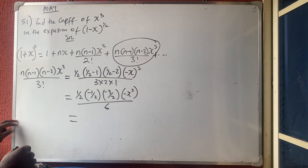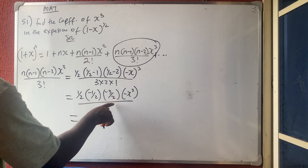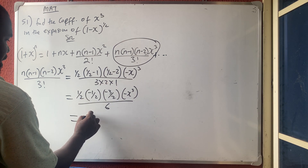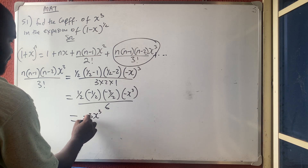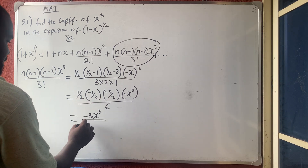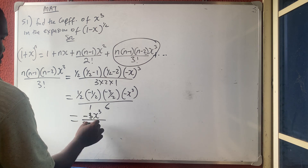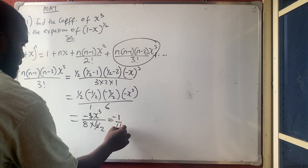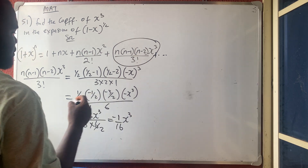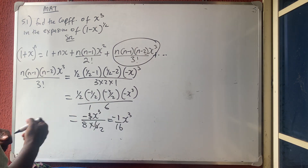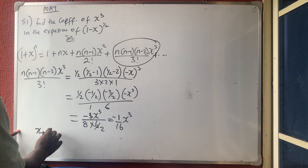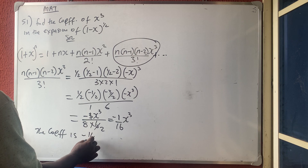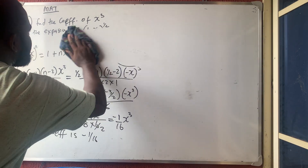Working through the signs: minus times minus is plus, then times minus gives minus. We get minus 3x³ over 2 times 8 times 6. Cancelling, this simplifies to minus 1 over 16 times x³. So the coefficient of x³ is minus 1 over 16. Let's move to the next question.